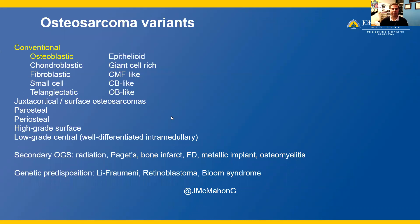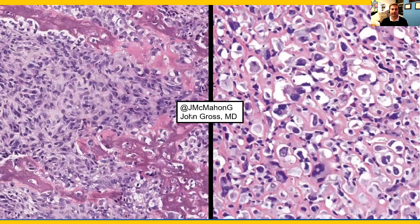There are many different osteosarcoma variants. Osteoblastic osteosarcoma is a type of conventional osteosarcoma. Conventional osteosarcoma osteoblastic type is one of the most common osteosarcoma variants. Here on the left is an example of this subtype with these malignant cells directly producing mineralized osteoid matrix, which is this pink and purple material that the sarcoma cells produce directly.